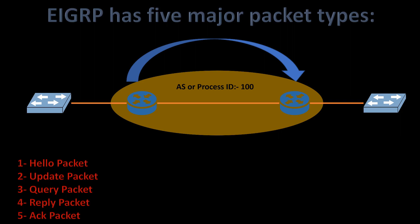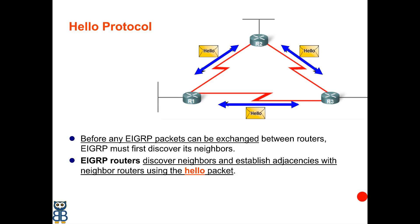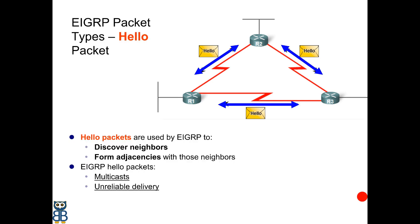There are five packet types that can be captured during the EIGRP process. Before any EIGRP packets are exchanged, EIGRP must first discover its neighbors by sending hello packets. Hello packets are sent every five seconds and are exchanged between directly connected neighbors as multicast. EIGRP routers discover neighbors and establish adjacencies using hello packets, which do not require acknowledgement.